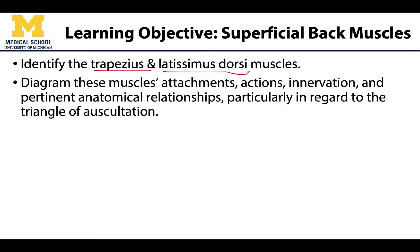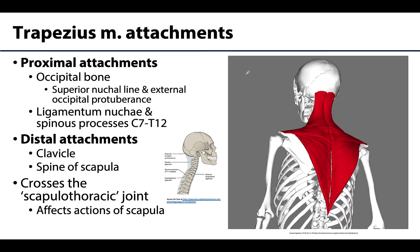You may have heard these abbreviated as your lats and your traps. Let's start with the more superior set, the trapezius muscles, which really looks like one muscle, but there is a right and a left muscle. You can kind of see where they have a separation here around the spinous processes, and as I mentioned, these are extremely expansive muscles as you can see.